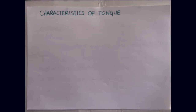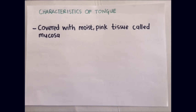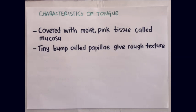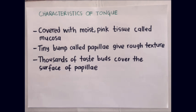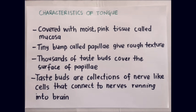The characteristics of the tongue. It is covered with moist, thin tissue called mucosa. Tiny bumps called papillae give it a rough texture. Thousands of taste buds cover the surface of the papillae. Taste buds are collections of nerve cells that connect to nerves running into the brain.